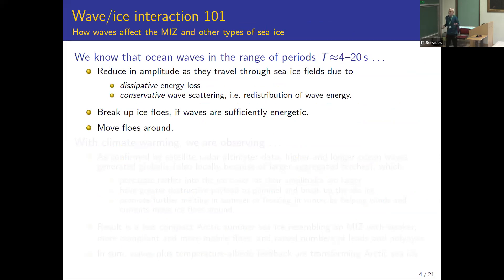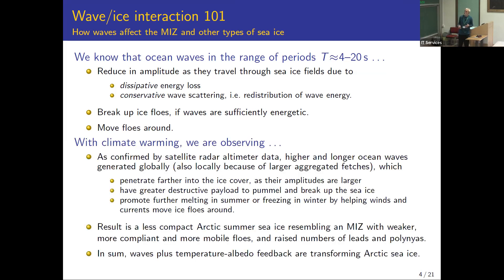Waves in the four to roughly twenty second band reduce amplitude as they move through the ice. That reduction is caused by dissipative energy loss but also a redistribution of wave energy due to conservative scattering. The waves break up the floes if sufficiently energetic and move floes around — radiation stress is quite important in the marginal ice zone. With climate warming, things are getting more intense: winds and wave heights are increasing globally, with more open water in the Arctic.